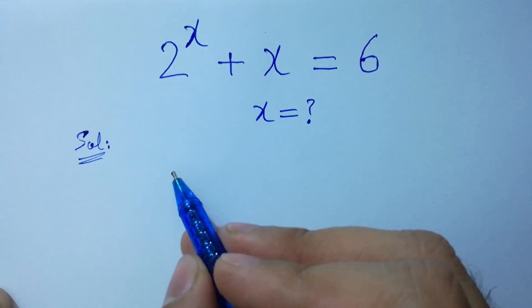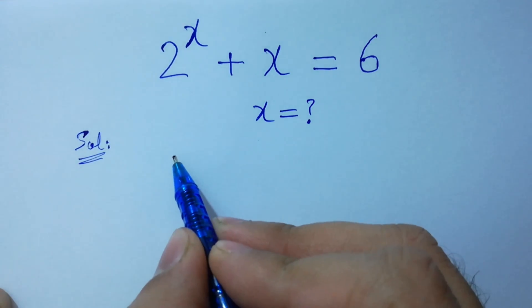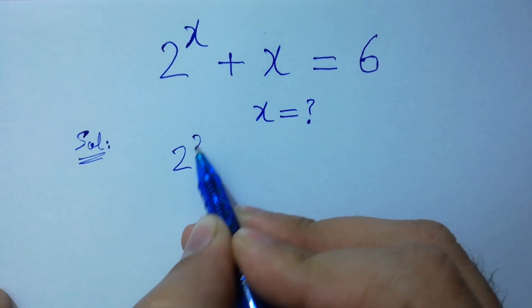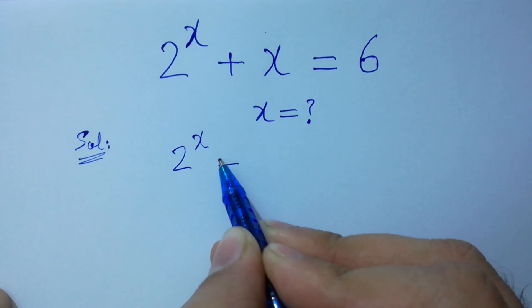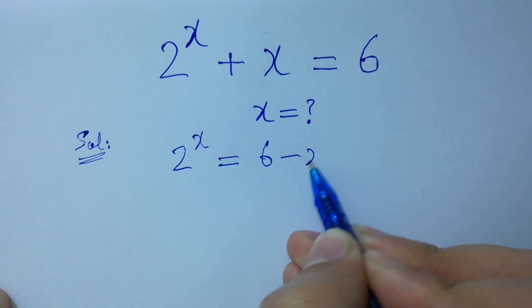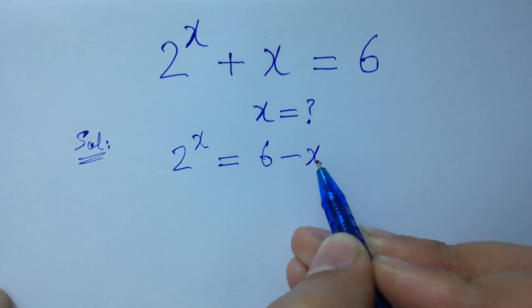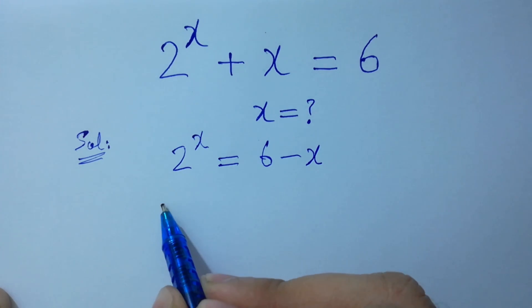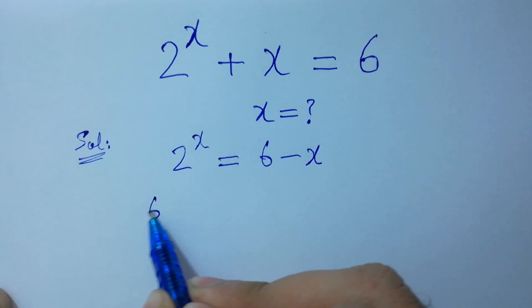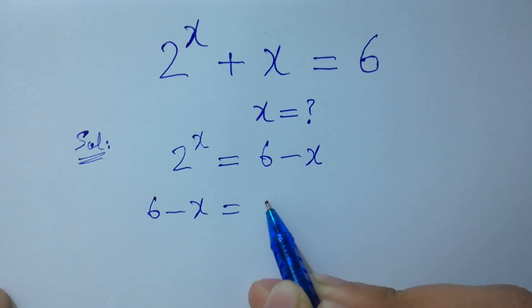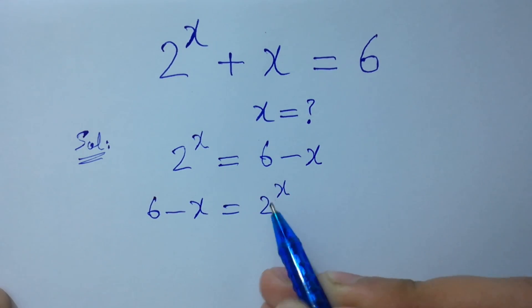To solve this, it can be rearranged as 2 to the power x equals 6 minus x, which is the same as 6 minus x equals 2 to the power x.